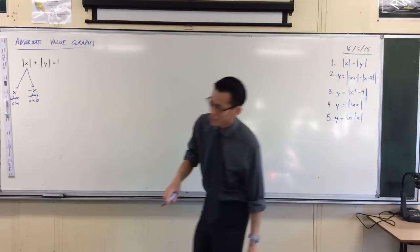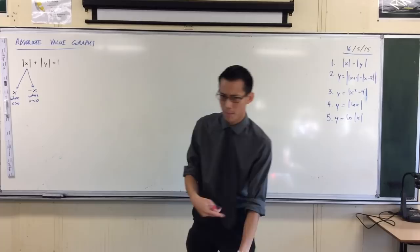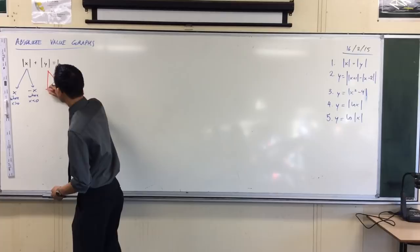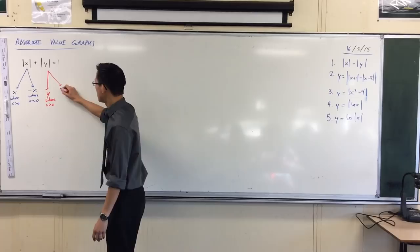Now, in exactly the same way, the absolute value of y is going to follow the same rules, except it's not going to be about x domains, it's going to be about y. So this is going to be equal to y where y is positive, and where y is not positive, where it's negative, it's going to be negative y.